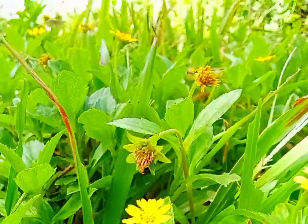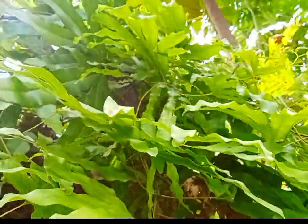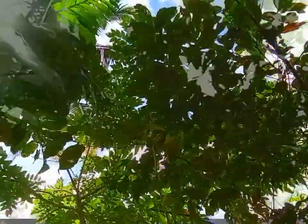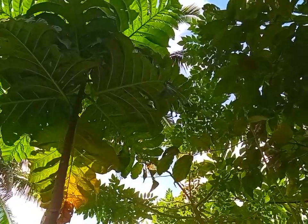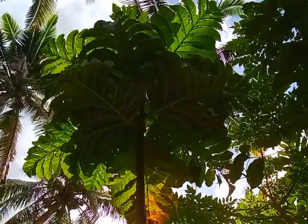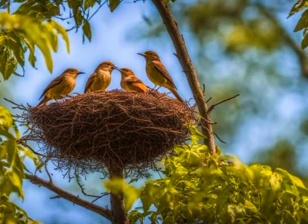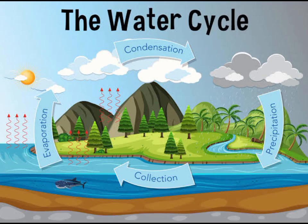Plants are living organisms that play a crucial role in ecosystems. They produce oxygen, which is essential for most life forms. They also serve as a primary food source and habitat for many animals, contribute to the water cycle, and help in soil conservation.